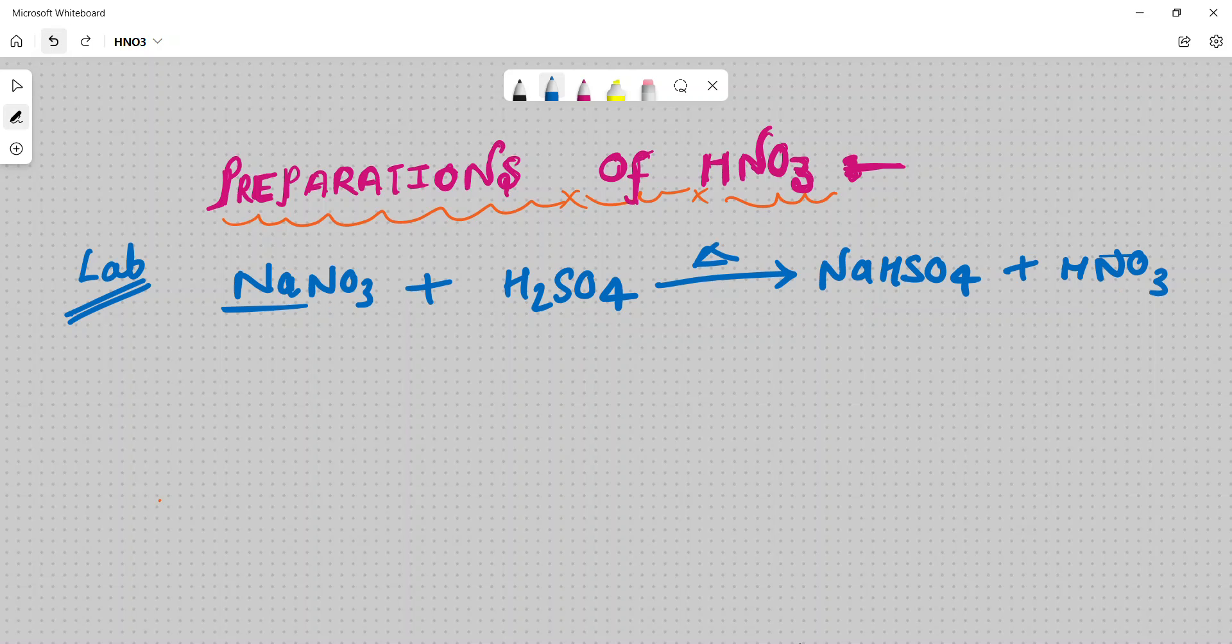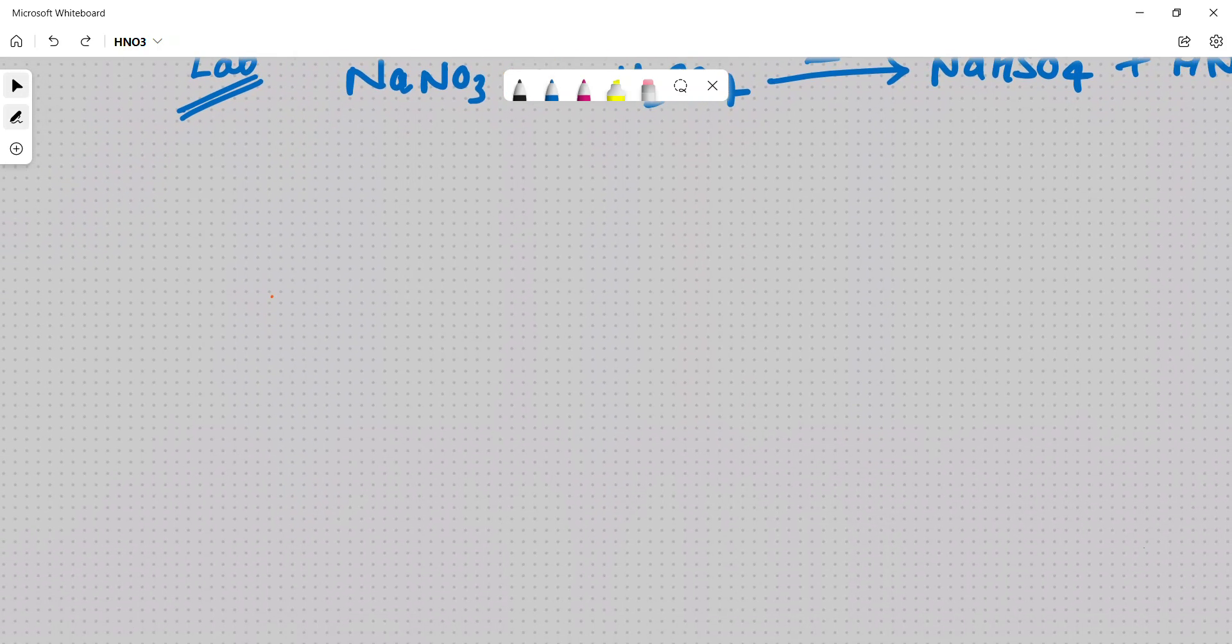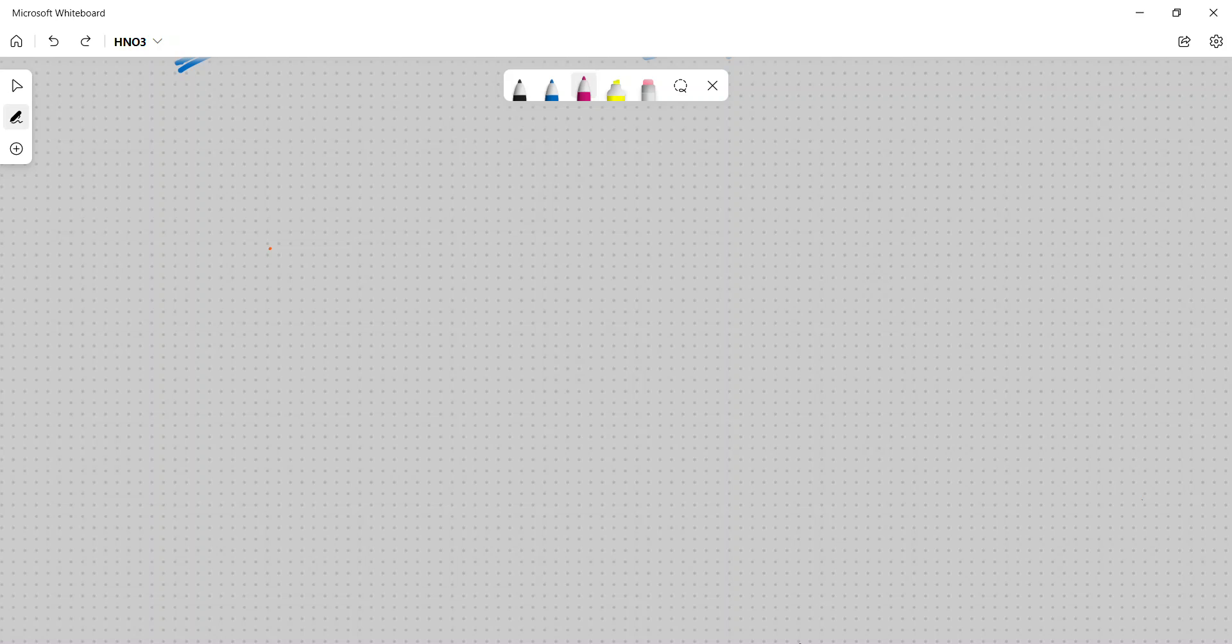Next, we will know industrial preparation. How is it prepared in the industry? It's a very important process, Ostwald process, by Ostwald process.